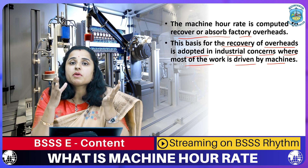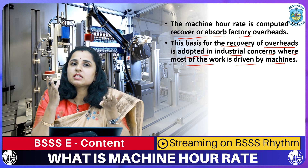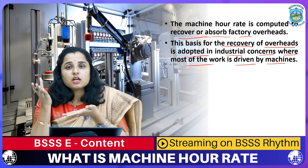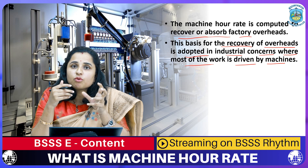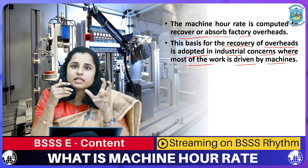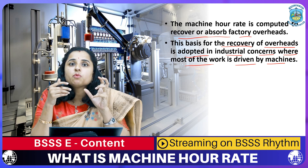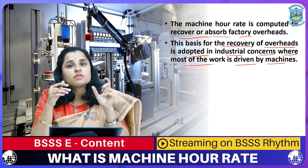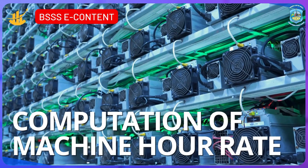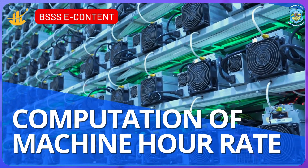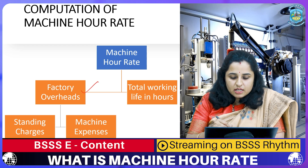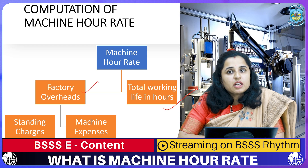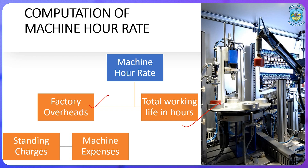Machine Hour Rate plays a very important role in machine-driven industries because all expenses incurred in a factory are related to machines. For computation of Machine Hour Rate, we need two things: one is factory overheads, and another is the total working life of the machine in hours. Factory overheads are divided into two items: standing charges and machine expenses.